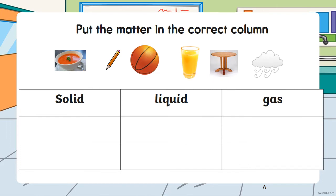Let us put the matter in the correct column. Here we have a bowl of soup, a pencil, a ball, orange juice, a wooden table, and a cloud. Which one will be solid? The table will be solid. Which one will be liquid? The juice will be liquid.